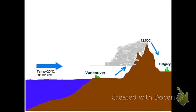The adiabatic rate differs depending on whether the air is dry or moist. If the air is dry — in other words, no visible moisture — the dry adiabatic rate is 3 degrees Celsius per 1,000 feet. Temperature drops 3 degrees Celsius per 1,000 feet as air is forced up, and increases 3 degrees Celsius per 1,000 feet as it is forced down.